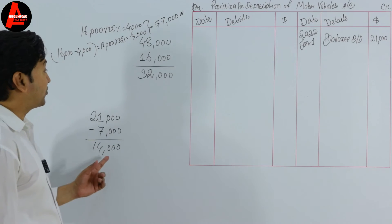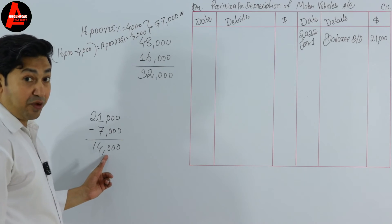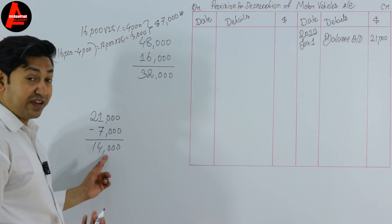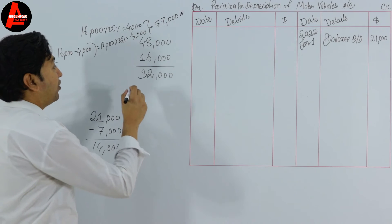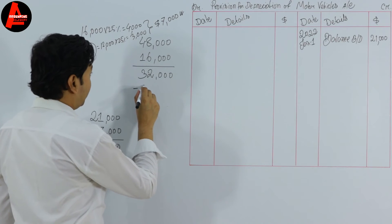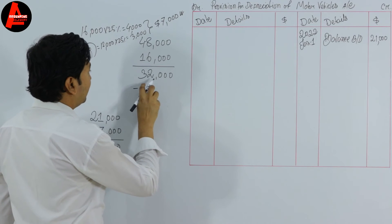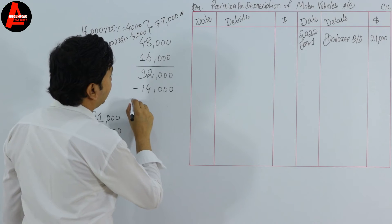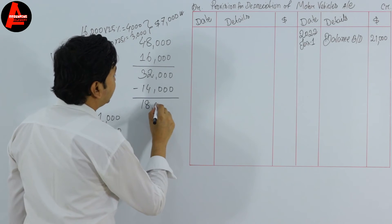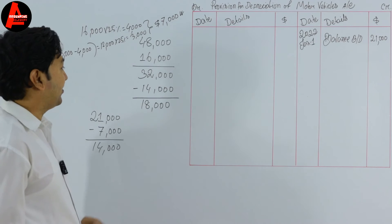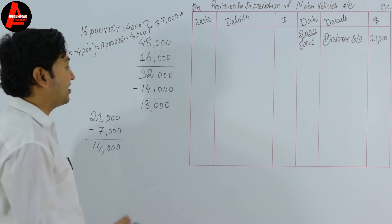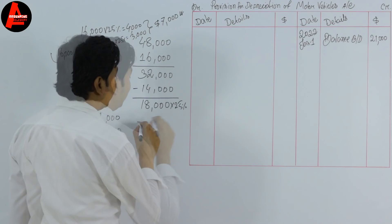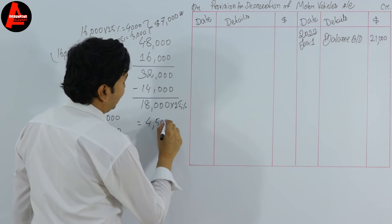After removing the $7,000 depreciation on the disposed asset, the remaining provision for depreciation on existing assets is $21,000 − $7,000 = $14,000. Subtracting this from the $32,000 remaining cost gives a net book value of $18,000. Multiplying $18,000 by 25% gives the current year depreciation of $4,500.